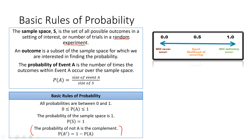Probabilities really close to zero mean they're very unlikely to occur, though not impossible. A probability of exactly zero means it will never occur. A probability of 0.5 is like a coin flip — half the time it'll happen, half the time it won't. A probability of one means it will absolutely definitely occur. In statistics, we usually have probabilities somewhere in the spectrum rather than being set at exactly zero or one.